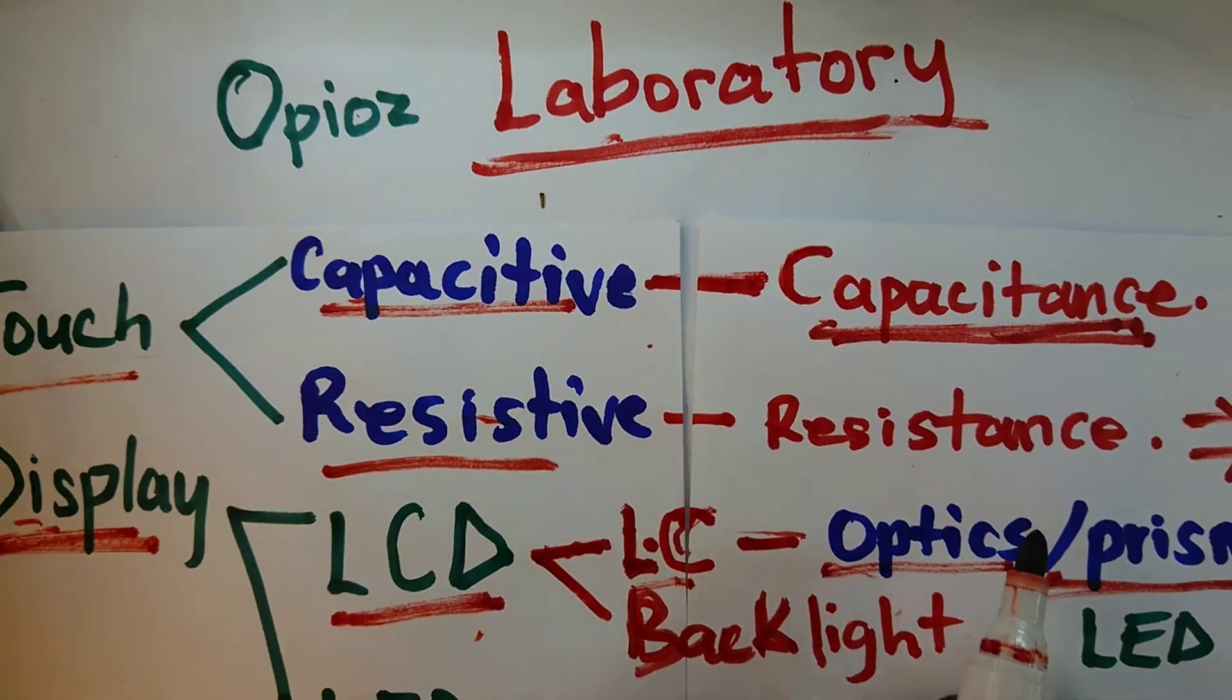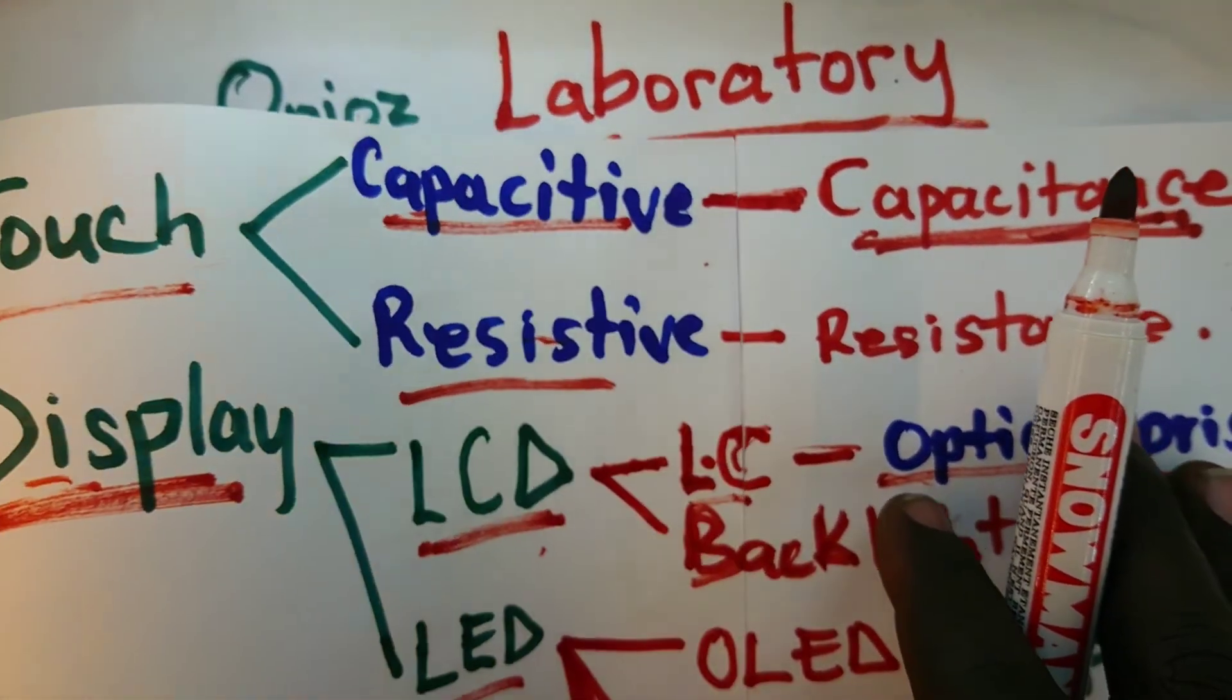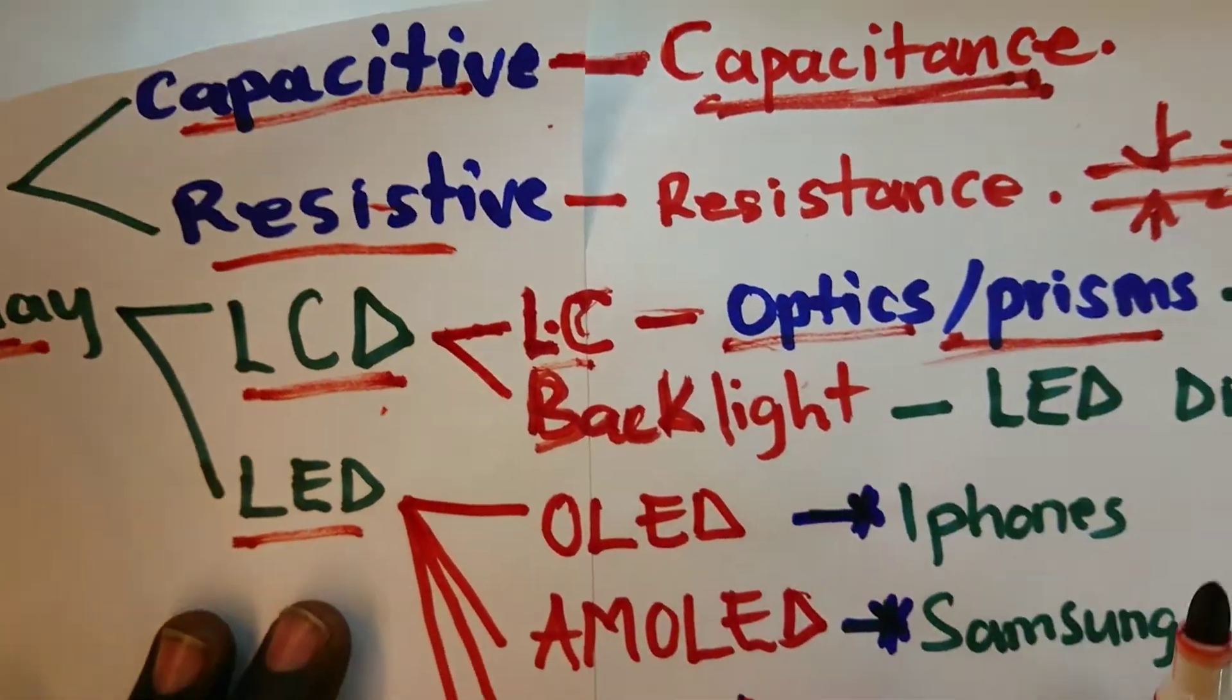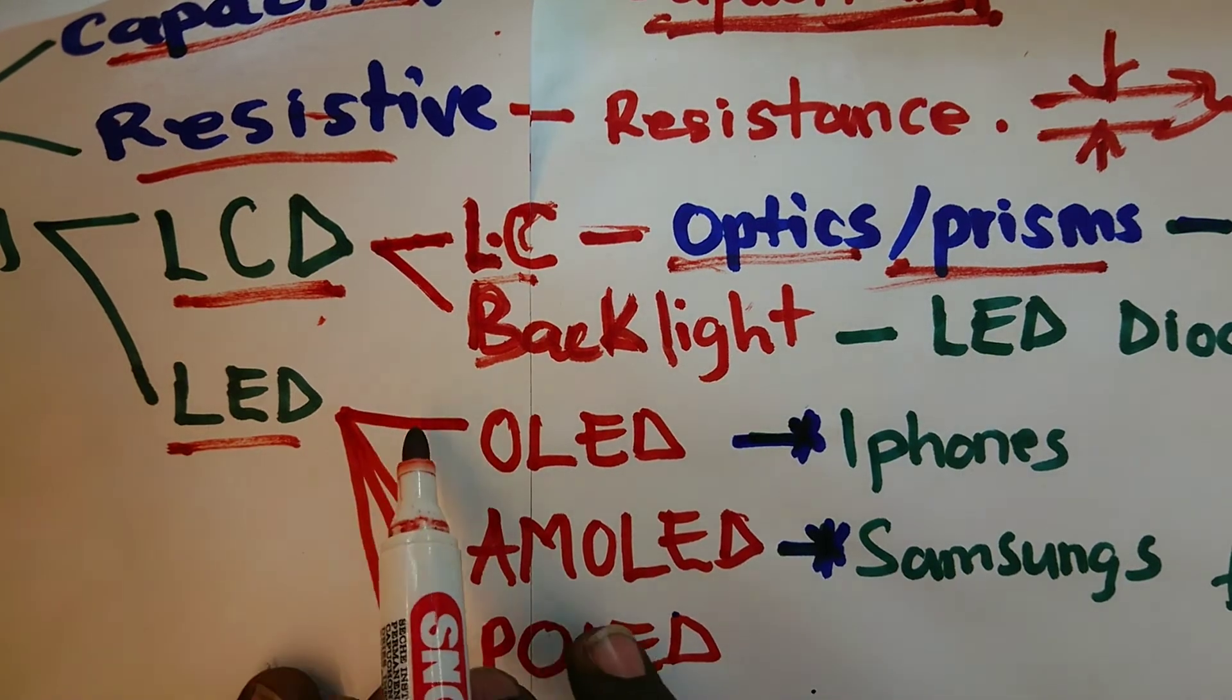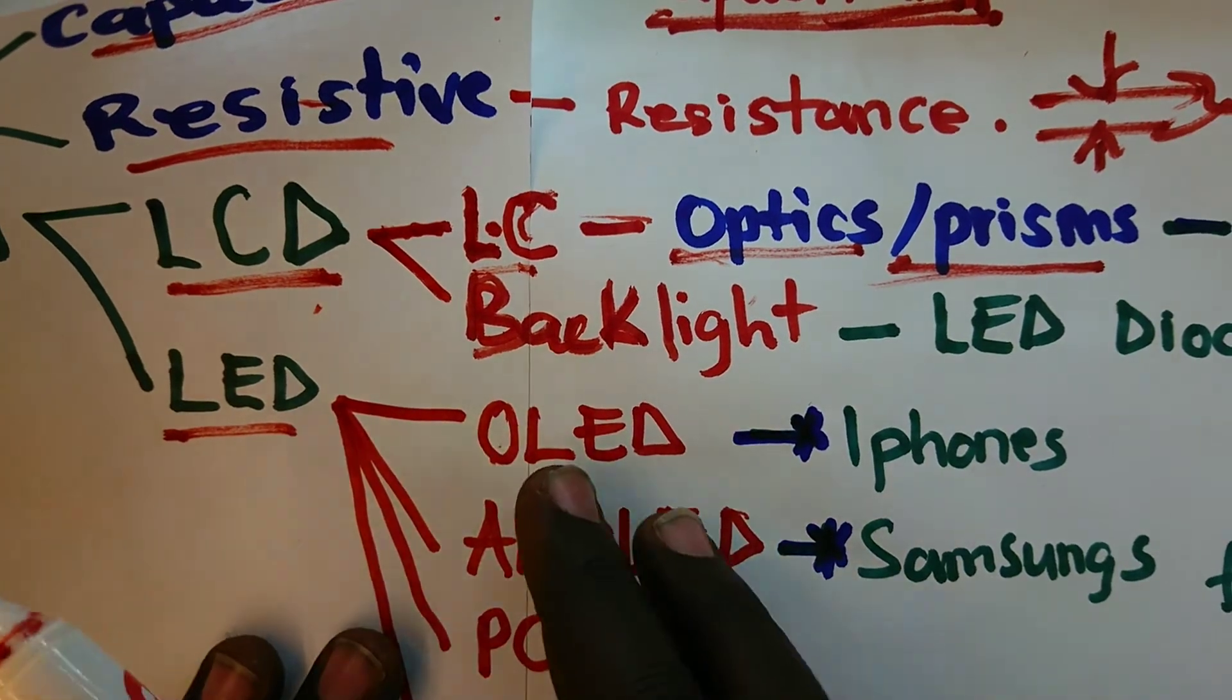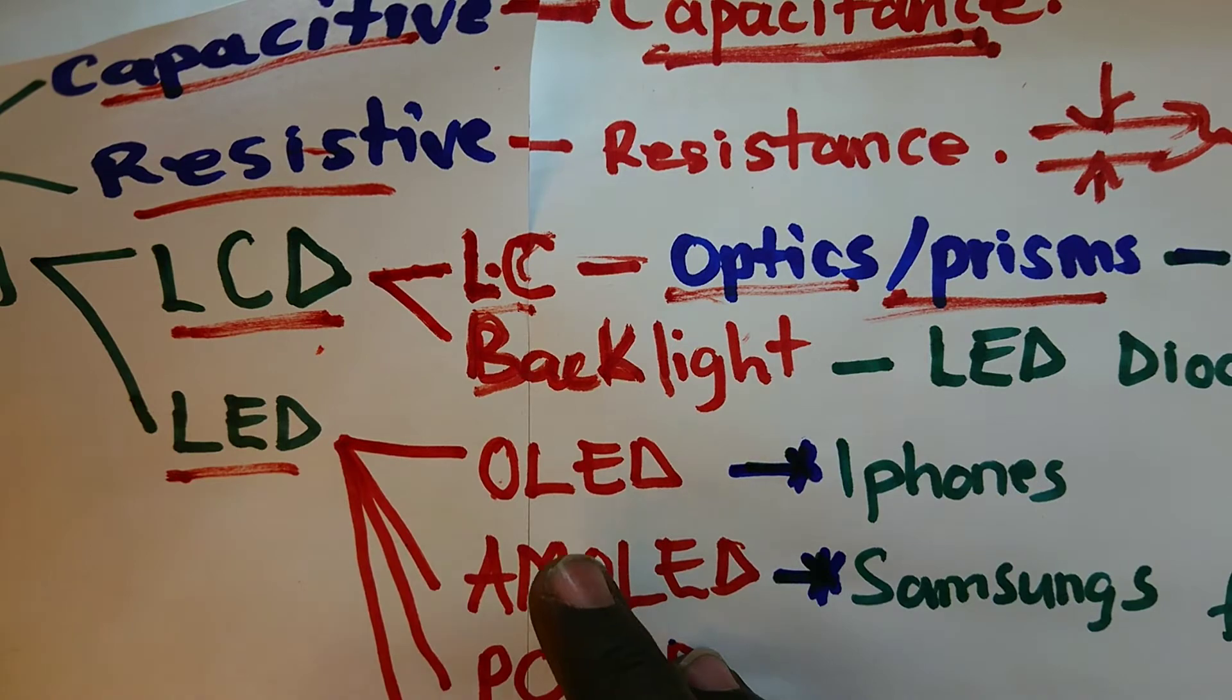Now back to displays. Remember we had said that we have the liquid crystal and the light emitting diode display technologies. Now the light emitting diode display technologies could actually be, when we talk of phones, could be split into OLED. OLED, that's simply organic light emitting diode. But in other words,